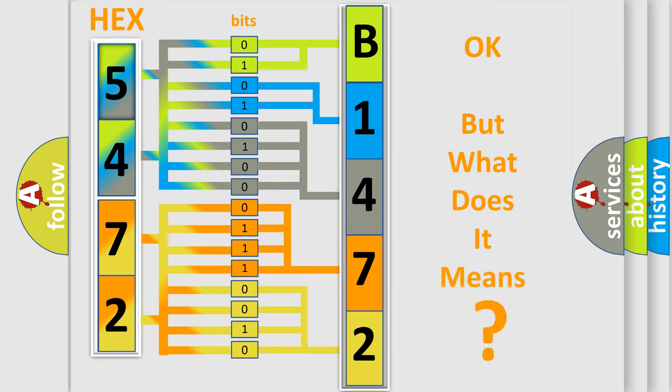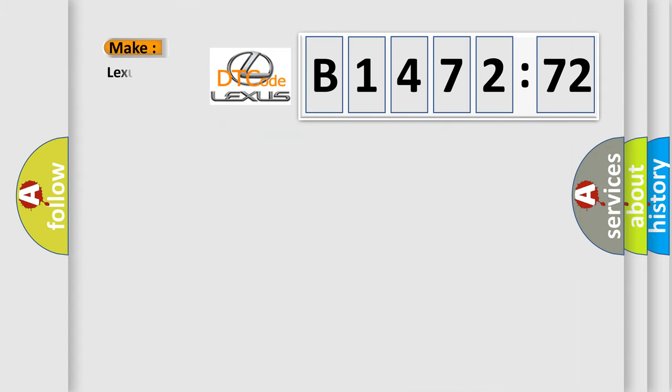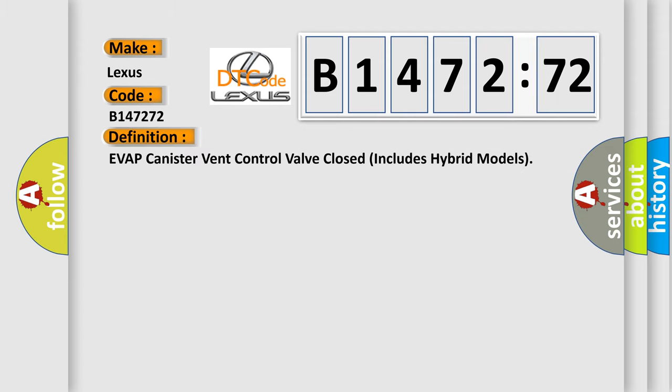We now know in what way the diagnostic tool translates the received information into a more comprehensible format. The number itself does not make sense to us if we cannot assign information about what it actually expresses. So, what does the diagnostic trouble code B147272 interpret specifically for Lexus car manufacturers?